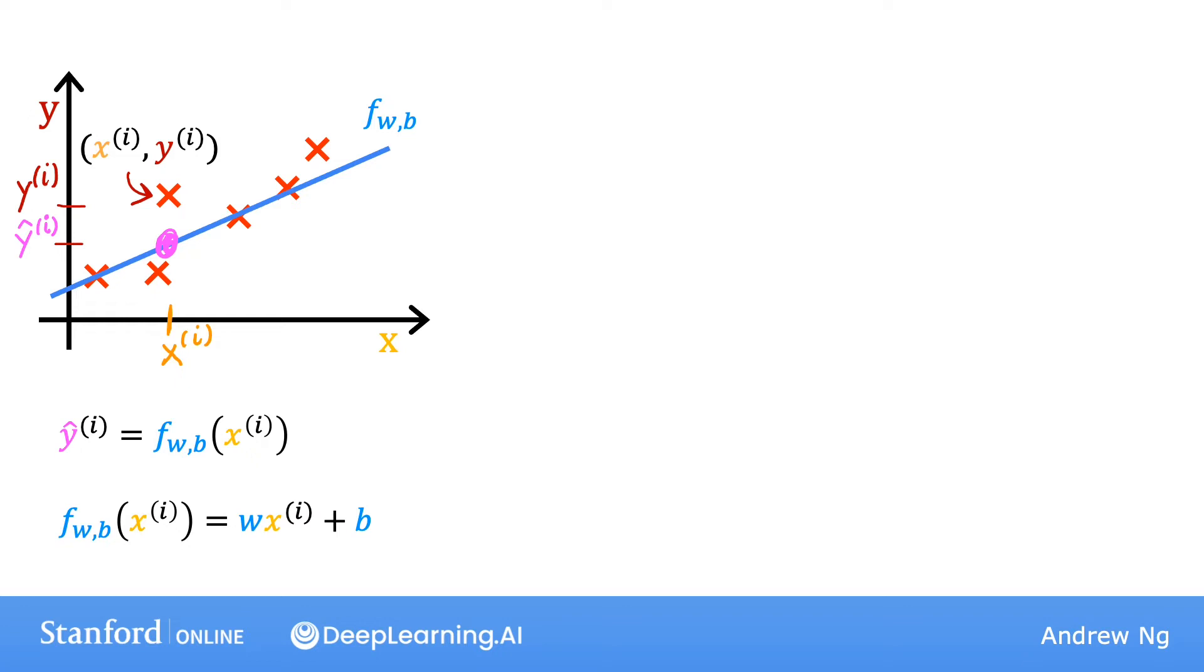So now the question is, how do you find values for w and b so that the prediction y hat i is close to the true target y i for many or maybe all training examples? To answer that question, let's first take a look at how to measure how well a line fits the training data. To do that, we're going to construct our cost function.